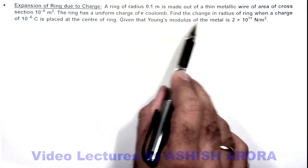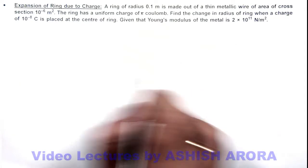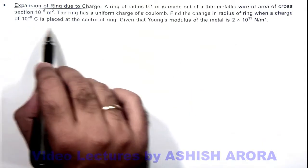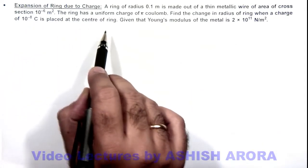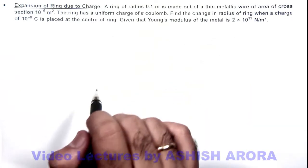We are required to find the change in radius of ring when a charge of 10 to power minus 8 coulomb is placed at the center of ring. We are also given with the Young's modulus of the metal.